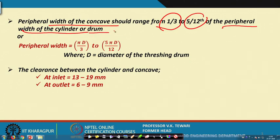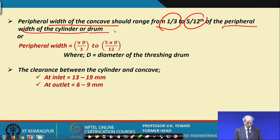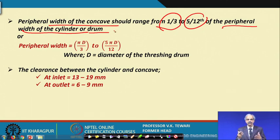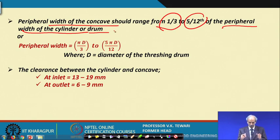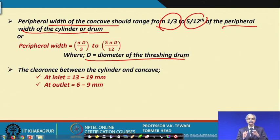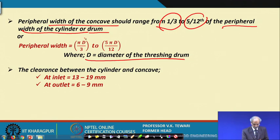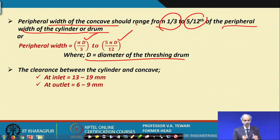This concept is derived from research experience. If the diameter of the drum is D, then according to the peripheral width formula, the values will vary from πD/3 to 5πD/12. Next, we consider the clearance between the cylinder and the concave.